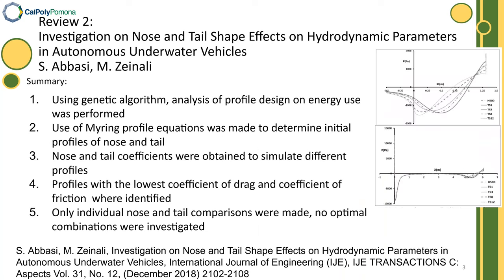The next review investigates nose and tail shape effects on hydrodynamic parameters using a genetic algorithm analysis for profile design, again using the Morison profile equations. Nose and tail coefficients were obtained to simulate different profiles, and the profile with the lowest coefficient of drag and friction were identified. However, only individual nose and tail comparisons were made — there was no optimal combination determined.